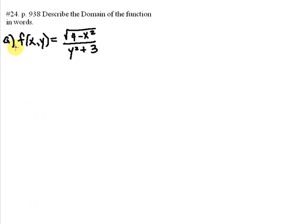In part a, we're given f of x, y equals 4 minus x squared over y squared plus 3. Now, again, when we're finding domains of multivariable functions, we're thinking very much the same way we did with domains of single variable functions.